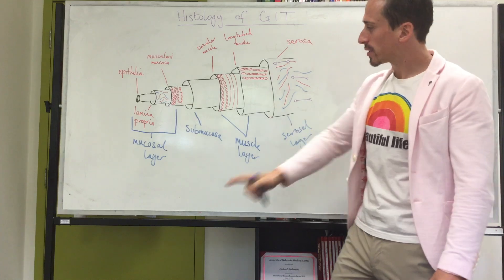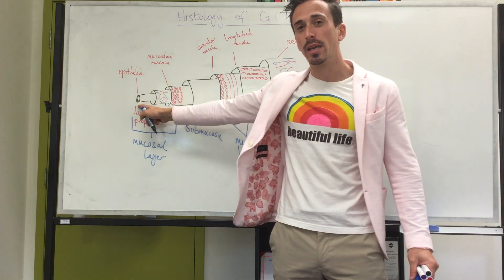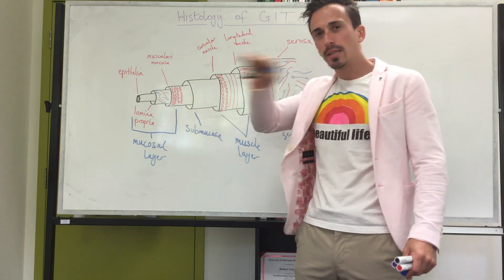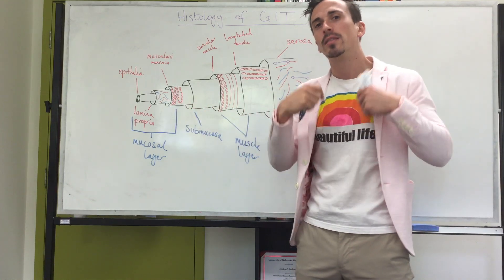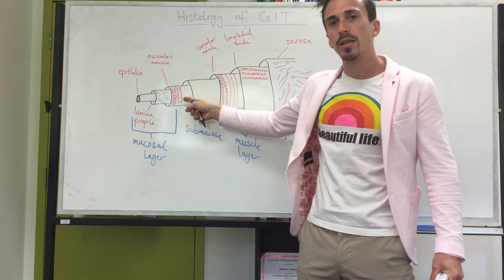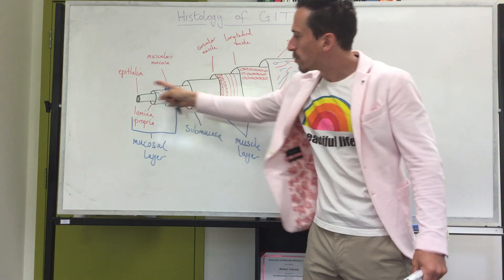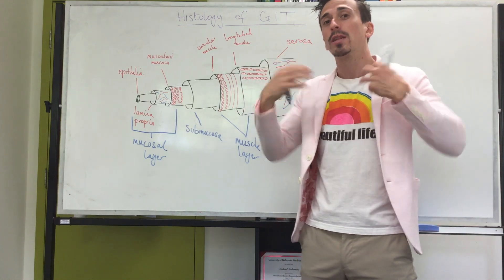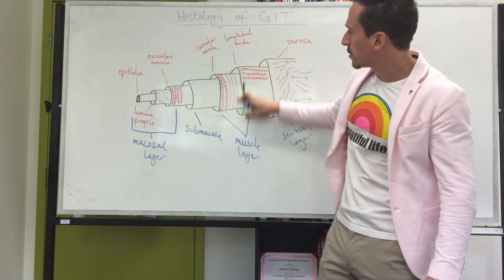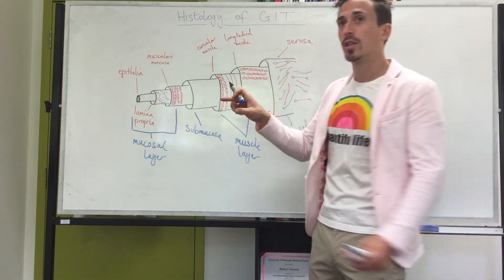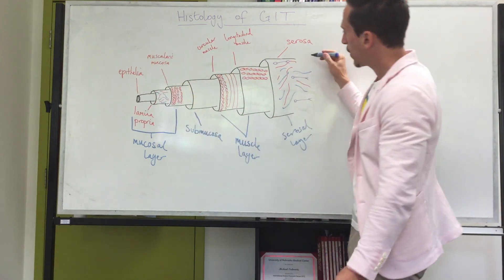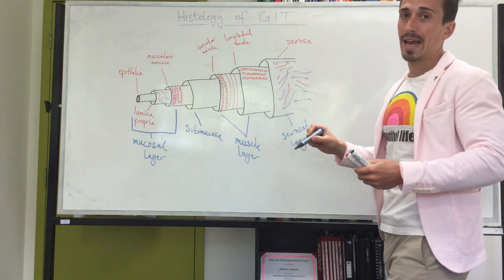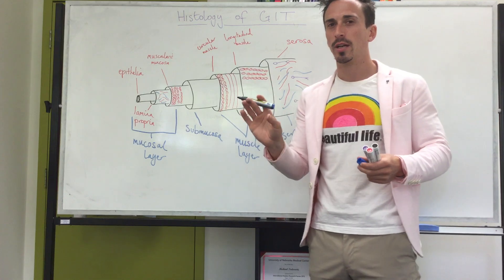So there are four major layers of the GIT. First, the mucosal layer — made up of the epithelial cells lining the lumen, the lamina propria (a connective tissue membrane with blood vessels, lymphatics, and nerve fibers), and the muscularis mucosa (a thin smooth muscle layer). Then the submucosa with glandular crypts releasing mucus. Then the muscle layer — circular and longitudinal — for mixing and propulsion. Finally, the serosal layer with blood vessels, nerve fibers, and lymphatic tissue on the most external aspect.